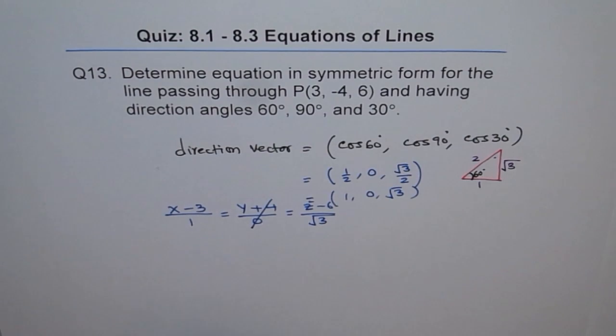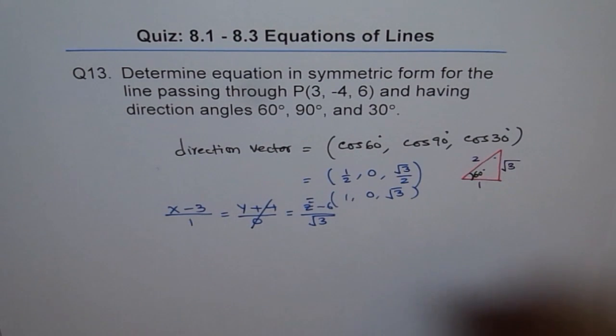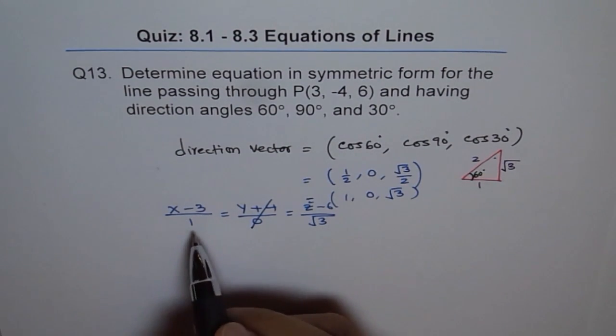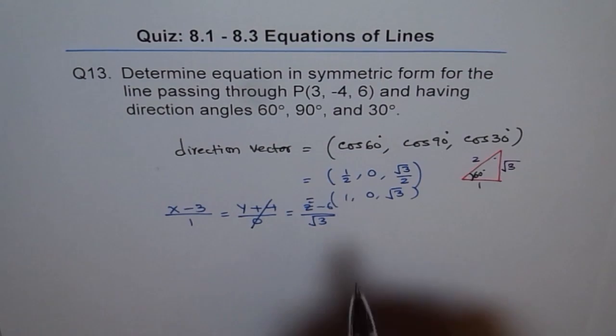Equals to z minus 6 over square root 3. So when you get into this kind of a situation, where the denominator is 0, you can't divide anything by 0. So the way to write this is, and there is no point writing 1 here.